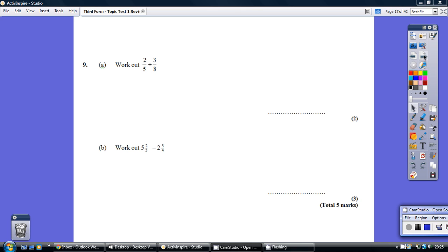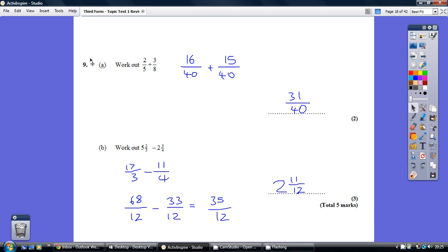Question 9, have a go. Okay, so when we're adding fractions, we need to have a common denominator, the same number on the bottom. So what do 5 and 8 both go into? They go into 40. So that establishes the 40 on the bottom.